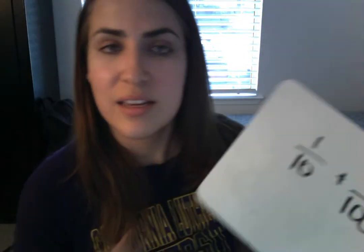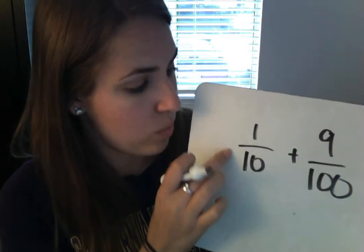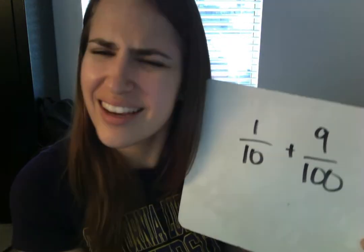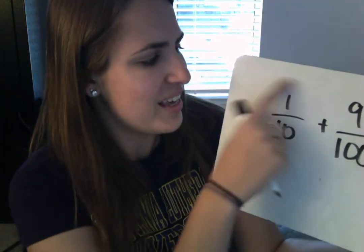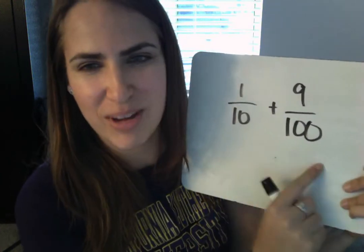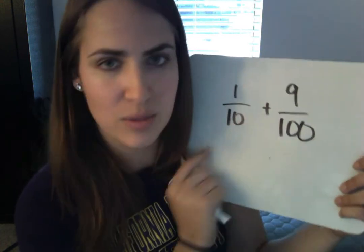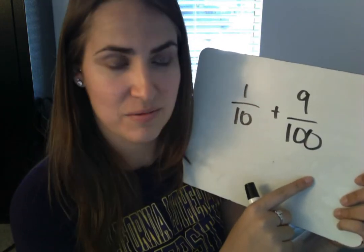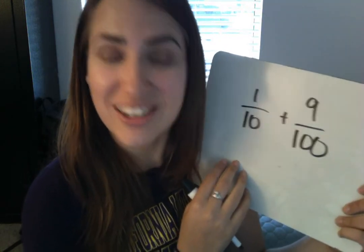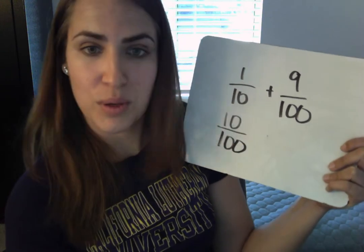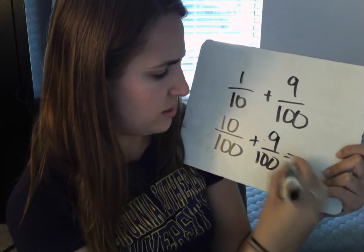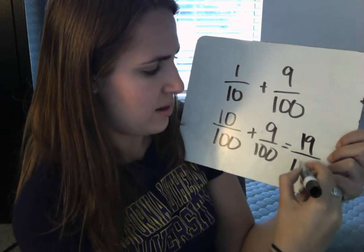So when we looked at the place value chart and we decomposed one tenth, we found that one tenth is the same as ten hundredths. So here we see we have one tenth plus nine hundredths. We can't add fractions unless they have the same denominator. So what we can do is make them have the same denominator. From earlier, we know that one tenth is the same as ten hundredths, so we can just rewrite our addition problem: ten hundredths plus nine hundredths, which gives us the answer of nineteen hundredths.